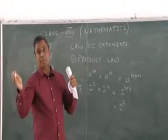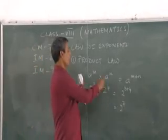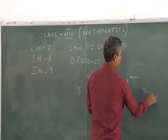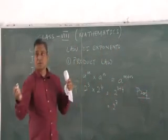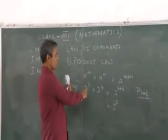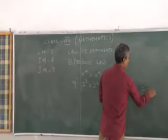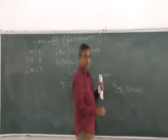But let us prove this law. I am not going to prove this law using variables. Let us prove this law from here using numerals or numbers. Now 2 to the power of 3 can be taken as 2 into 2 into 2. Three times. Is that alright?